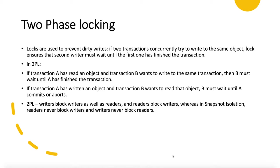If transaction A has read an object and transaction B wants to write to the same object, then B must wait until A has finished reading and completes the transaction. Similarly, if A has written an object and transaction B wants to read it, B must wait until A commits or aborts. So in two-phase locking, writers block other writers as well as readers, and readers block writers. Whereas in snapshot isolation, readers never block writers and writers never block readers.